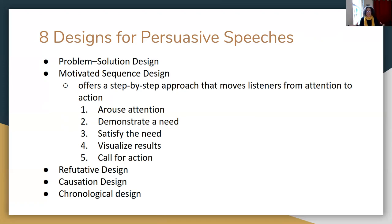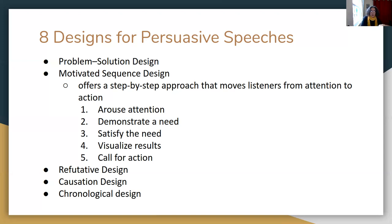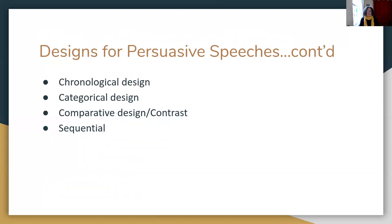The fourth is causation design: something happened — there's a cause and there's an effect. You look at what is causing a particular thing happening right now and all the things that led up to it. The fifth is chronological design, which works well with causation — you look at history and show how something over time has shifted, how decisions made at one point had an impact at another.